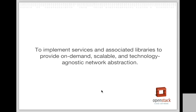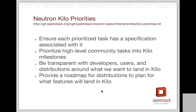I thought I would start off like I did last time with just a high-level overview of what the networking program's mission is. As you see, it's to implement services and associated libraries to provide on-demand, scalable, and technology-agnostic network abstractions. One thing worth noting is the services portion of this and how we're developing that and how that may affect operators and deployers.